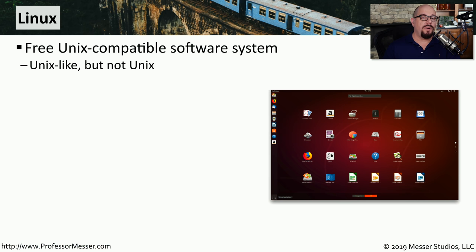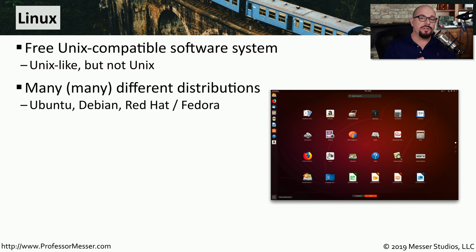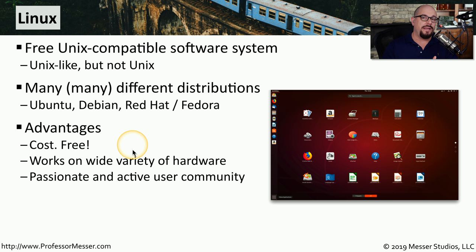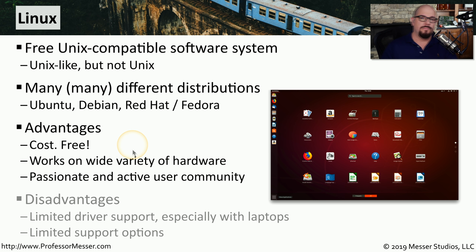Another popular operating system is the free operating system of Linux. With Linux, there is no single Linux operating system - instead, there is a combination of features put together into what the Linux community calls distributions. One of the obvious advantages of Linux is the cost - there is no cost associated with using or running any applications on a Linux operating system. Linux also works on a wide variety of hardware, and the user community is very large and worldwide, so there will always be someone willing to help. However, because Linux relies on this user community, there are some limitations to the hardware that can be supported, with limited driver support for non-mainstream hardware.